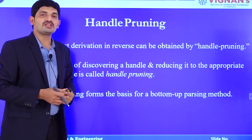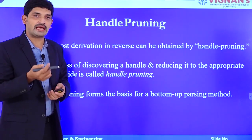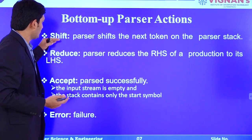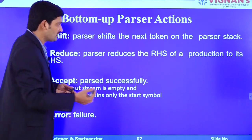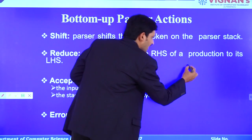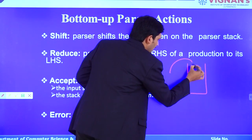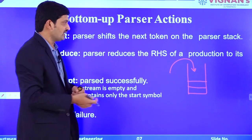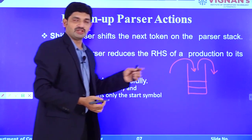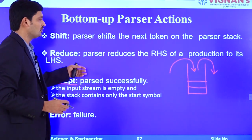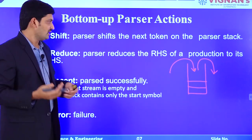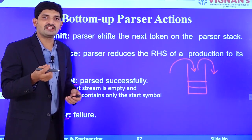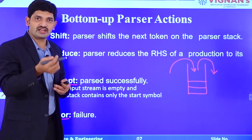Handle pruning: a reverse of a rightmost derivation is obtained by handle pruning, which means identifying which string to reduce and which production to use. The actions associated with bottom-up parsers are: shift — push input symbols onto the stack; reduce — pop symbols from the stack and replace with the left-hand side of a production; accept — if parsing is successful and the string is generated, it is accepted; and error — if parsing is unsuccessful or no production can complete the string, an error is reported.